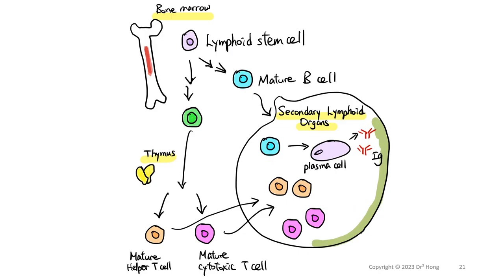Here is a visual summary of the origins of both B cells and T cells. Starting at the bone marrow, lymphoid stem cells generate B cells and T cells. B cells leave as mature B cells, travel through circulation to secondary lymphoid organs where they can further mature and be activated into plasma cells that produce circulating antibodies. T cells leave as immature thymocytes, mature in the thymus into either helper T cells or cytotoxic T cells, and further circulate in blood and secondary lymphoid organs where they are multiplied.